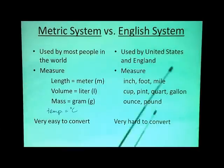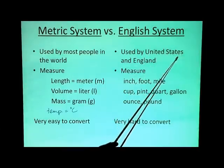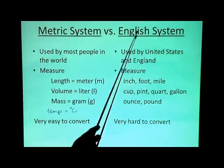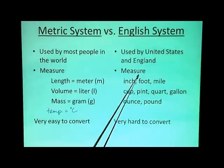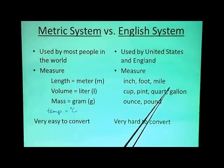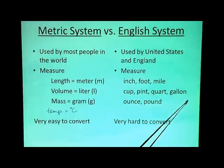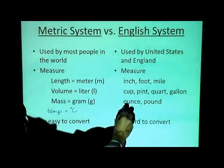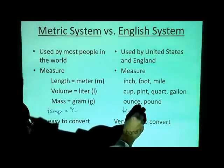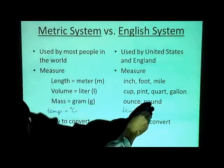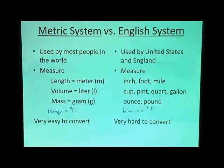In the English system, which is what we use here in the United States as well as England, measurement in length would be in inches, feet, or miles. Measurement in volume would be in cups, pints, quarts, or gallons. And measurement in mass would be ounces or pounds. For temperature though, it would be in degrees Fahrenheit, which is what we use here in the U.S.